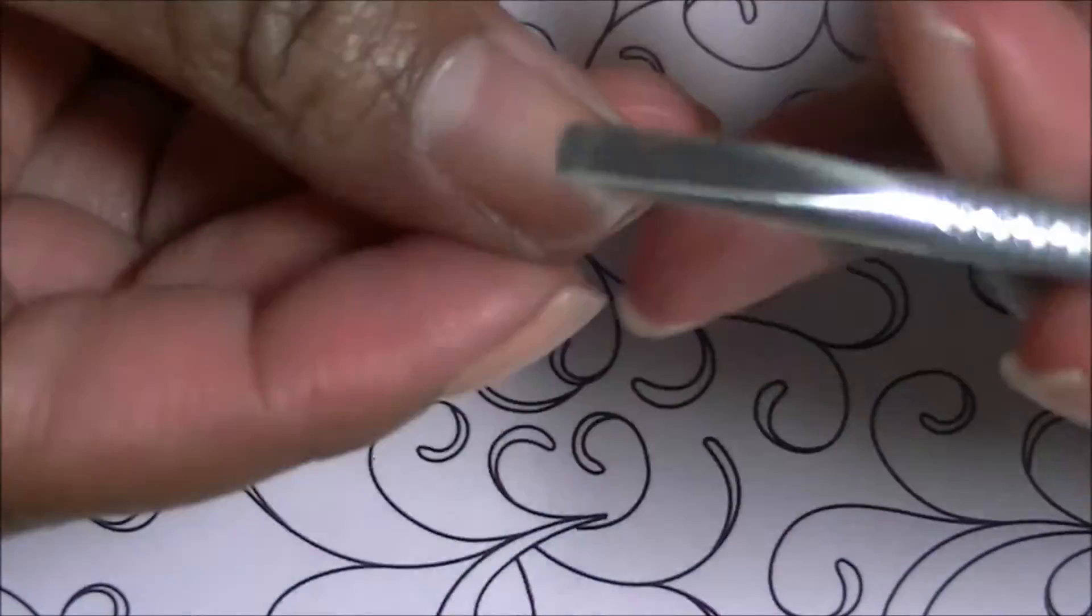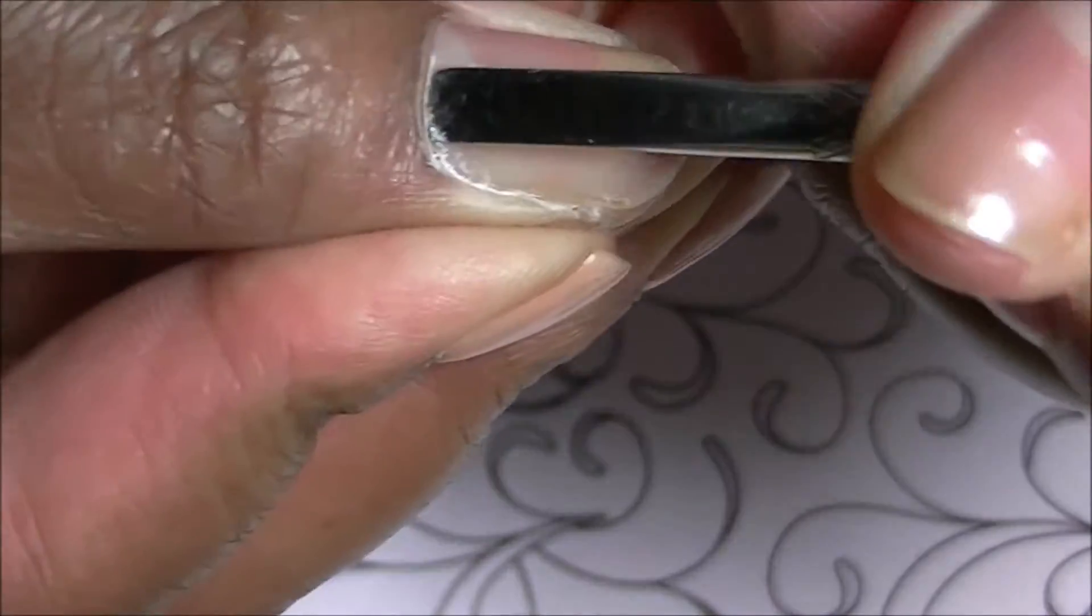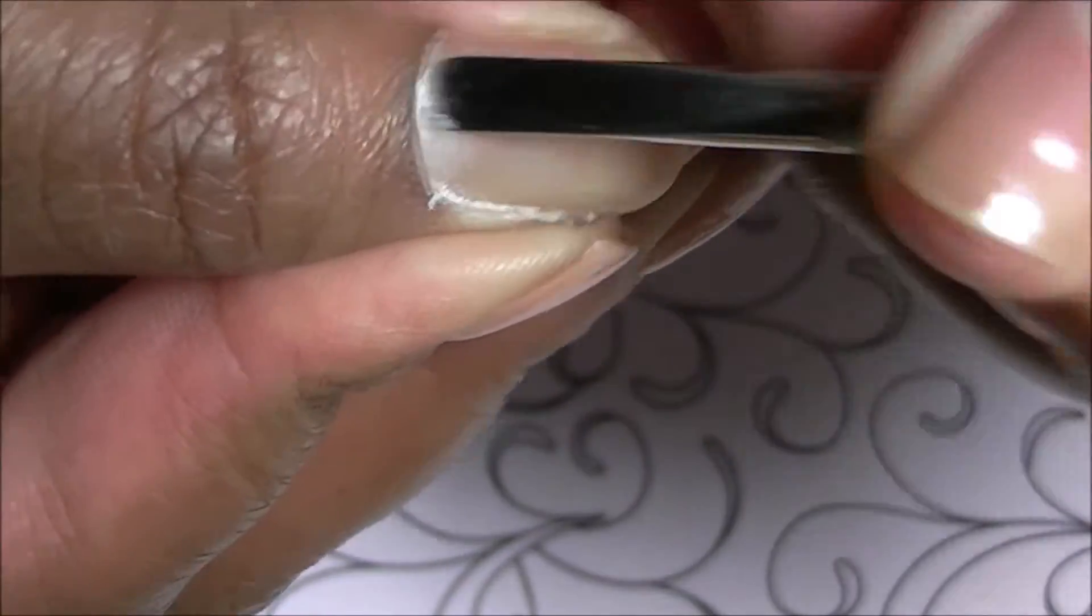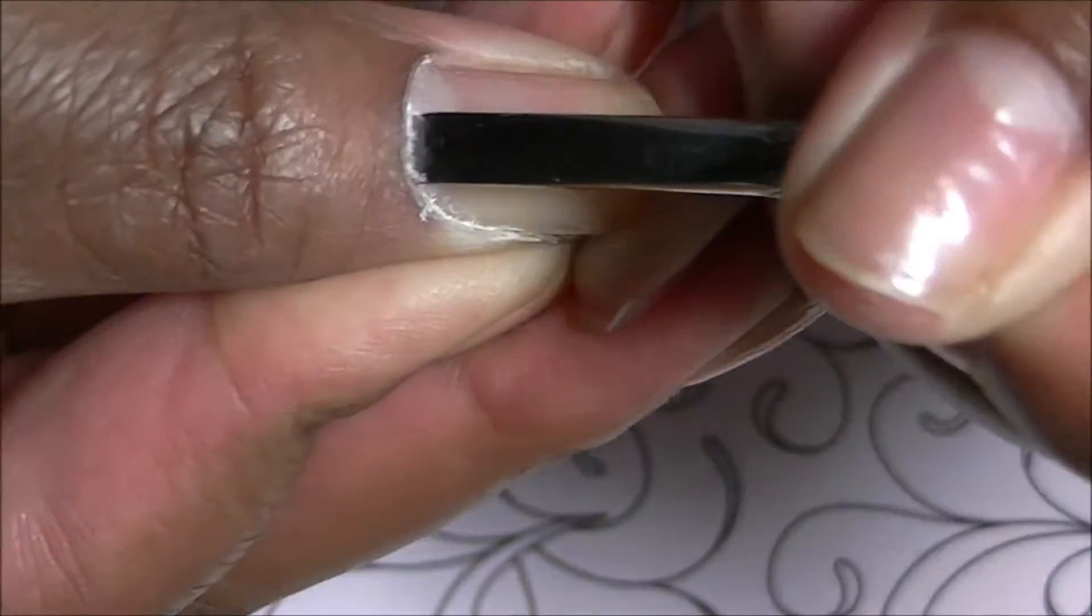You can use an orange wood stick if you'd like. I'm just going to use this as I usually do and I'm going to gently push my cuticle back. It may not look like I'm being gentle, but I sped the video up because I took some time doing this, as I was actually in need of a manicure.